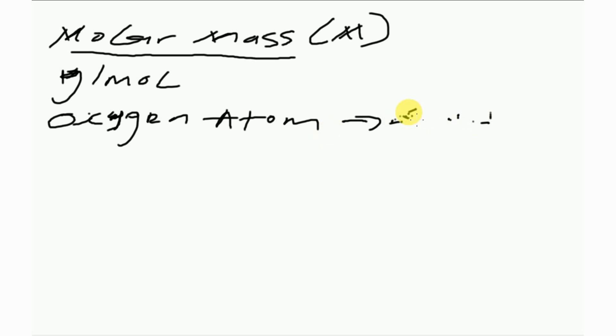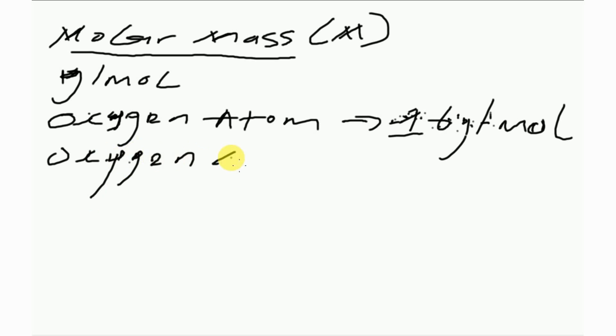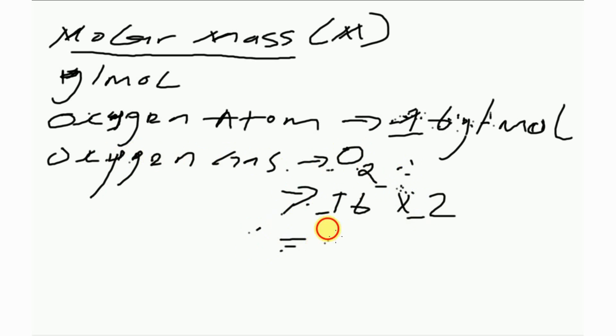If you have been told to find the molar mass of oxygen gas (O₂), it will be 16 times 2 which is 32. So the molar mass of oxygen gas is 32 grams per mole. Let us also look at the molar mass of compounds.